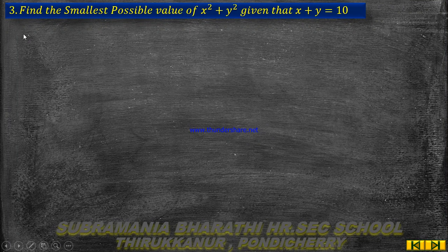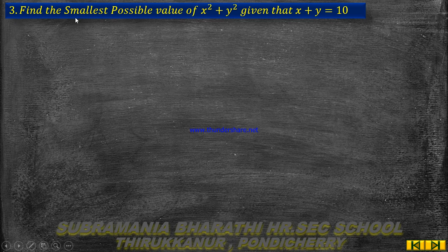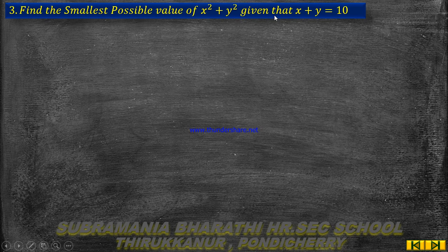Chapter 7, Exercise 7.8, Question No. 3. Find the smallest possible value of x squared plus y squared, given that x plus y equals 10.